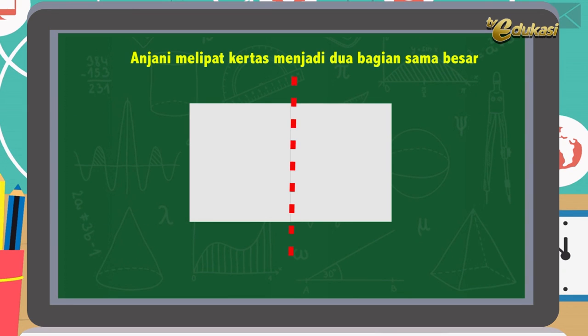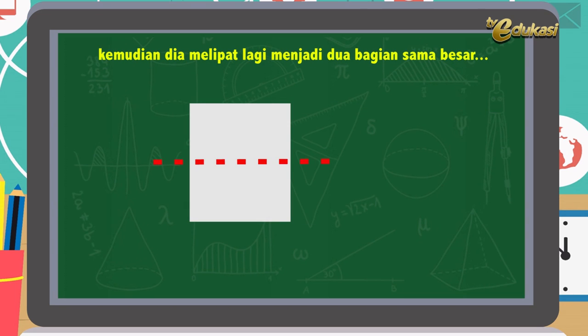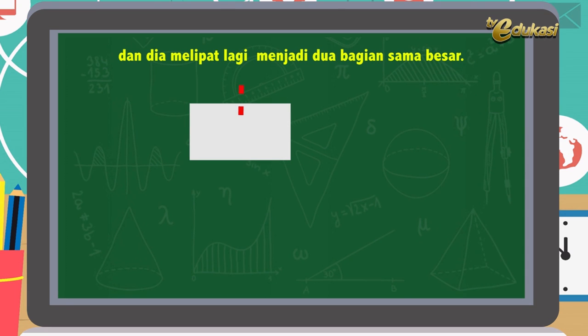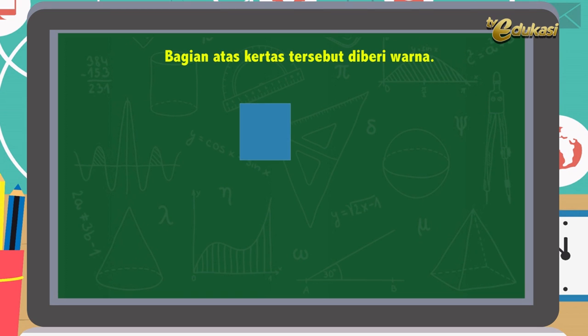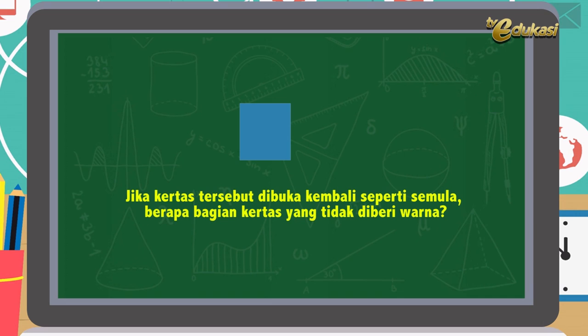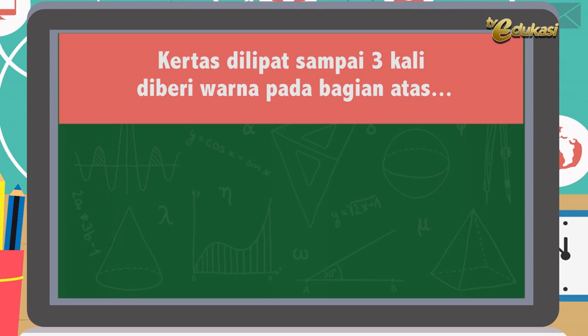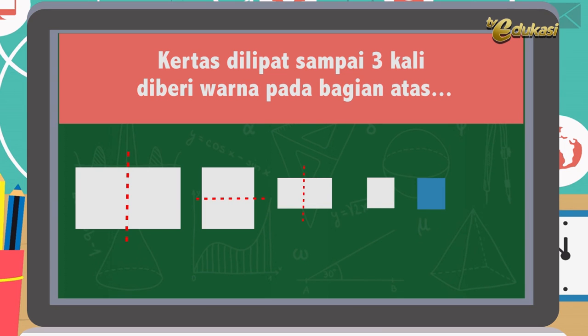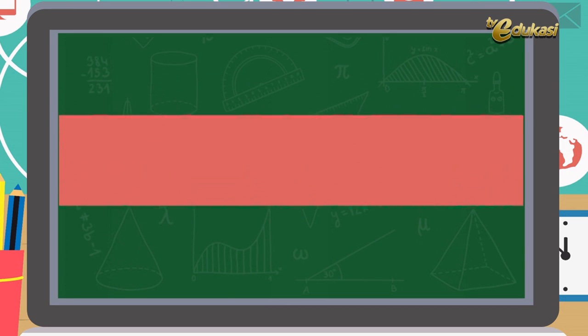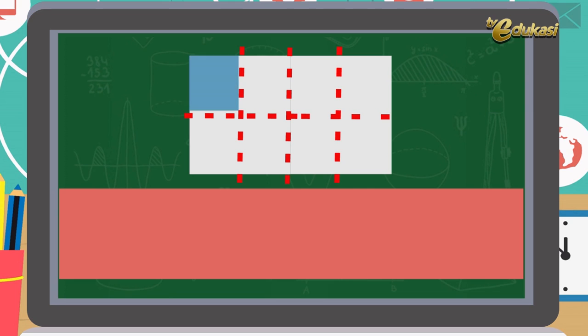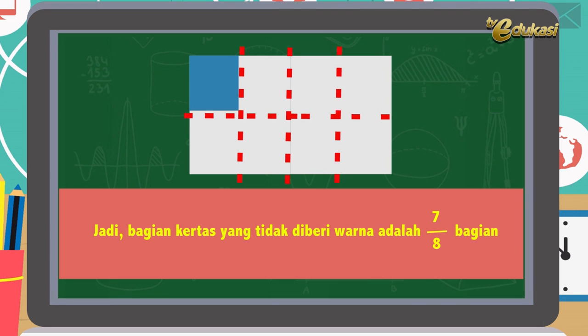Baik anak-anak, sekarang Bapak akan memberikan soal HOTS dalam bentuk pecahan. Apa itu HOTS? Higher Order Thinking Skill atau berpikir tingkat tinggi. Perhatikan soal berikut: Anjani melipat kertas menjadi dua bagian sama besar. Kemudian dia melipat lagi menjadi dua bagian sama besar. Dan dia melipat lagi menjadi dua bagian sama besar. Bagian atas kertas tersebut diberi warna. Jika kertas tersebut dibuka kembali seperti semula, berapa bagian kertas yang tidak diberi warna? Solusi: kertas dilipat sampai tiga kali, diberi warna pada bagian atas. Kertas dibuka kembali menjadi gambar berikut. Kesimpulan: bagian kertas yang tidak diberi warna adalah 7 per 8 bagian.